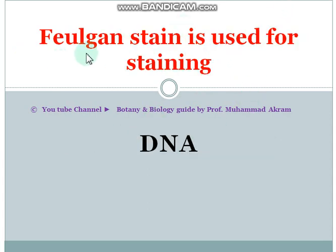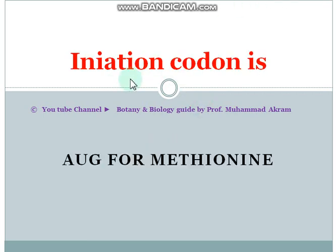Feulgen stain is used for staining DNA. The initiation codon is AUG, and it codes for methionine.